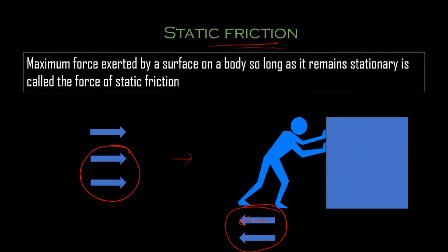So the maximum force exerted by the surface on the body — on the box — so long as it remains stationary, is called the force of static friction. These two arrows represent those forces. Static friction is the maximum friction, and once this friction is overcome, it becomes easier for the body to move.